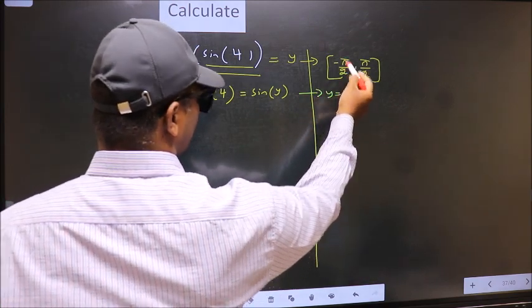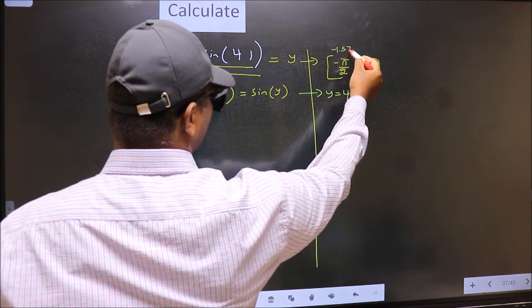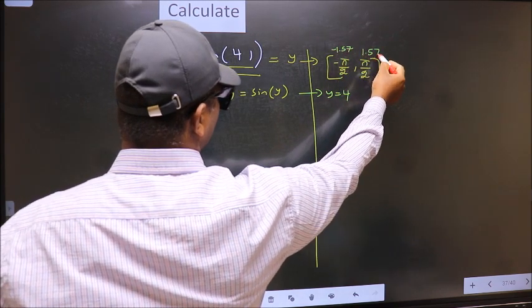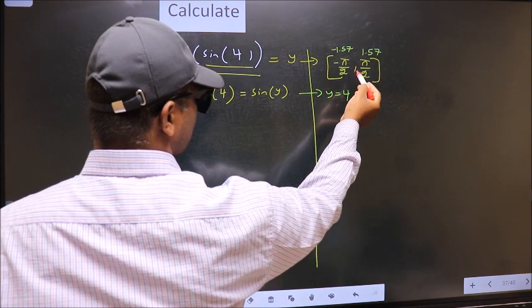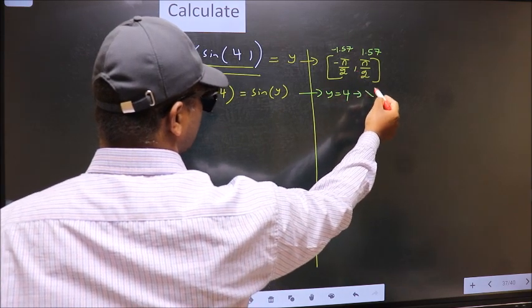Does 4 lie in this interval? This is minus 1.57 and this is 1.57. 4 does not lie in this interval. So reject 4.